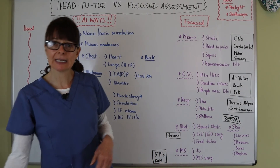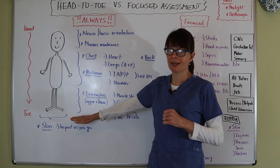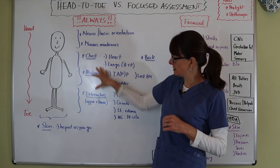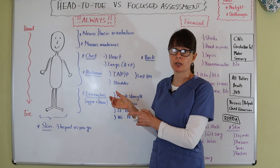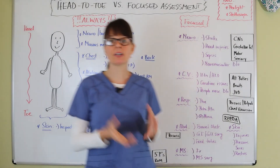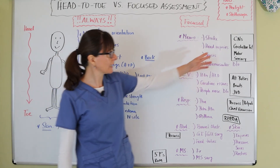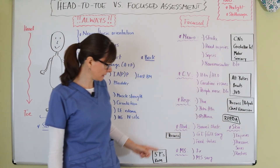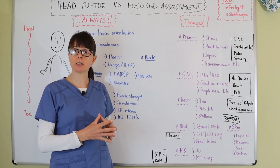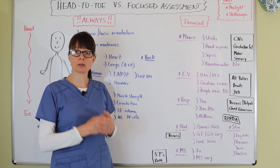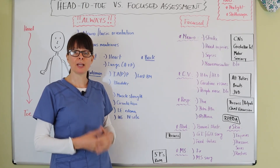In summary, we always want to assess in a head-to-toe fashion so that we don't miss anything. We always want to assess the basic things — and with practice this should take less than 10 minutes. Then if they're there for a particular problem, we want to focus on whatever body system is affected and do the additional assessments to really see how they are doing, determine any changes, base the interventions on these assessment findings, and hopefully get the patient better so they can go home and recover fully.